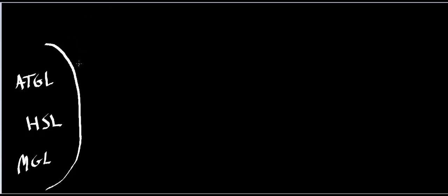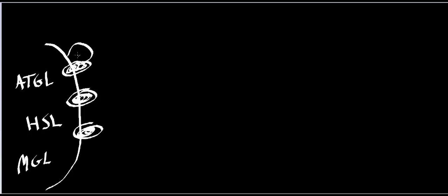On the membrane of the adipocyte, I have these things called perilipins. And on the perilipins, I have this protein called CG1. The CG1 is on all of the perilipins.